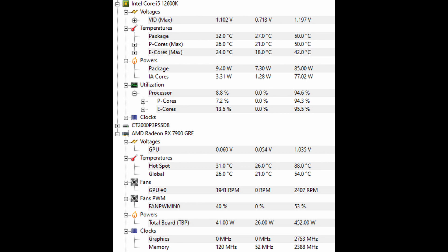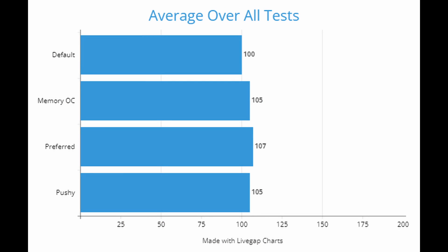This card performed incredibly well staying cool. The other reason to tune your graphics card is to improve performance. Averaging out how each different graphics setting performed over all tests, the winner is the preferred settings at 107% of the default. The memory overclock and pushy were both the same — which surprised me, showing just how important the memory is and how powerful this card could be. I'm getting a 7% performance boost without paying any penalty in cooling, and I'm really happy with the results.